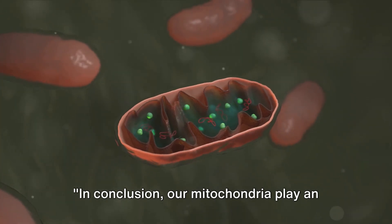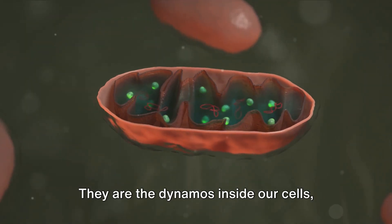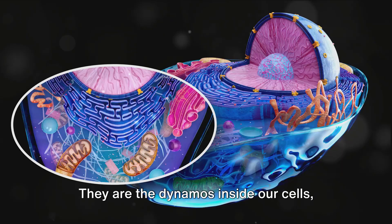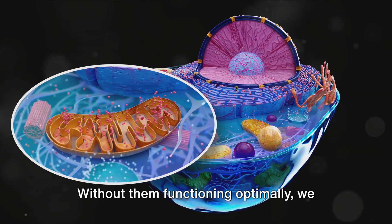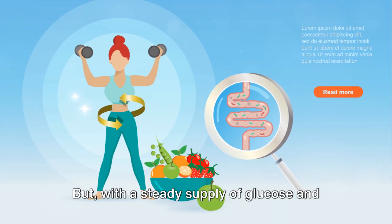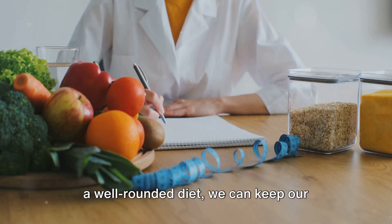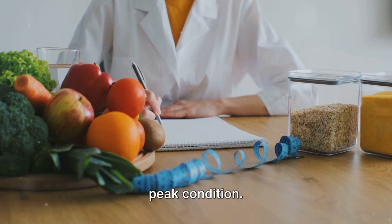In conclusion, our mitochondria play an essential role in our energy levels and overall health. They are the dynamos inside our cells, converting what we eat into usable energy. Without them functioning optimally, we can experience a host of health issues. But with a steady supply of glucose and a well-rounded diet, we can keep our mitochondria and therefore ourselves in peak condition.